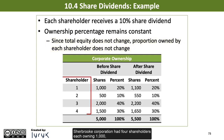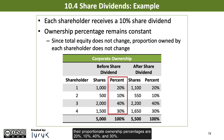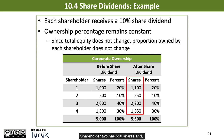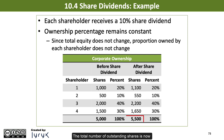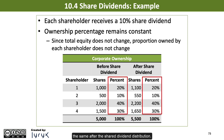For example, if before the share dividend, Sherbrooke Corporation had 4 shareholders each owning 1,000, 500, 2,000, and 1,500 shares respectively, their proportionate ownership percentages are 20%, 10%, 40%, and 30%. After the 10% share dividend is distributed, each shareholder has 10% more shares. Shareholder 1 now has 1,100 shares, Shareholder 2 has 550 shares, and Shareholders 3 and 4 each have 2,200 and 1,650 shares respectively. The total number of outstanding shares is now 5,500 shares instead of 5,000 before the share dividend, but the proportionate ownership percentage remains the same after the share dividend distribution.